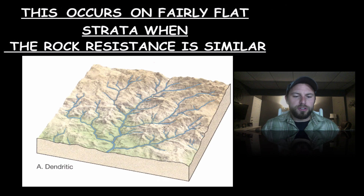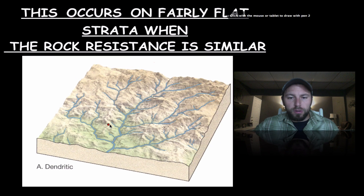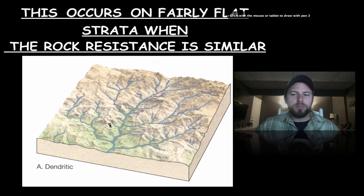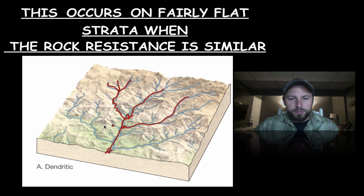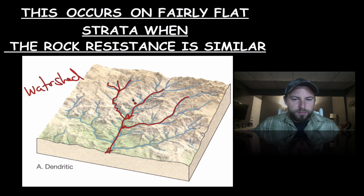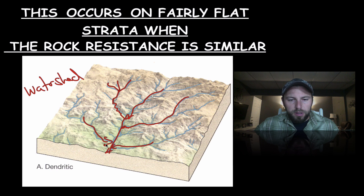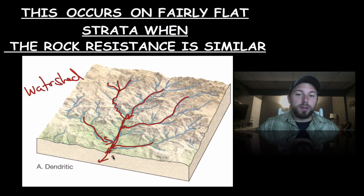The first one, the dendritic pattern, gets its name because it looks like the branches of a tree. This occurs when the bedrock is roughly the same resistance all the way throughout. The water will collect in whatever low-lying areas there may be and make its way towards a central branch or trunk of the river system. This whole system would be known as a watershed. All the water in this area collects and goes into this major stream and then flows out — that's typically what we see here in the Northeast.